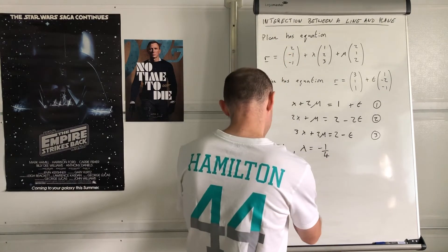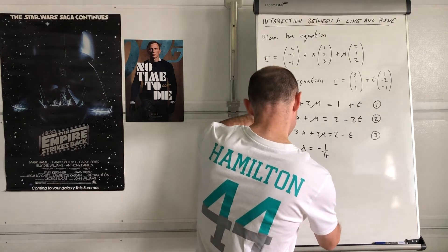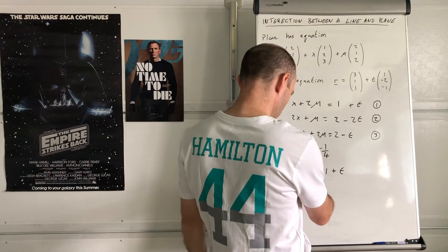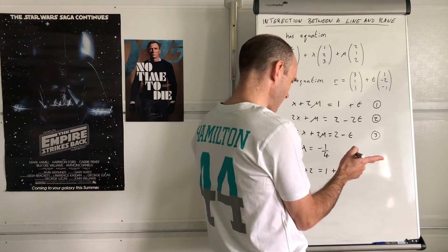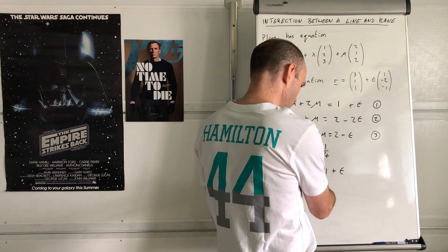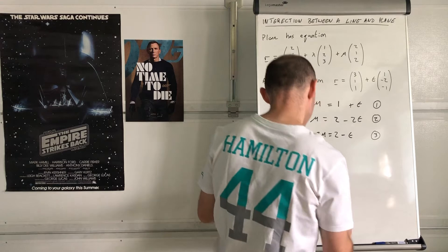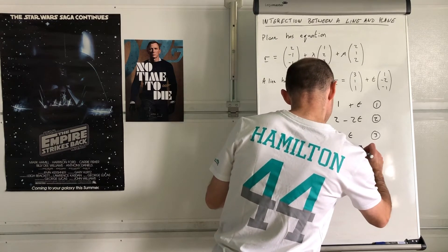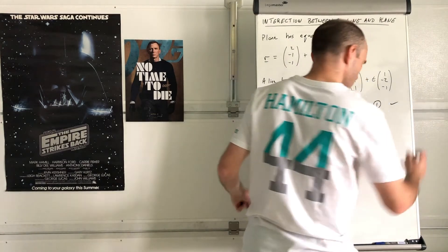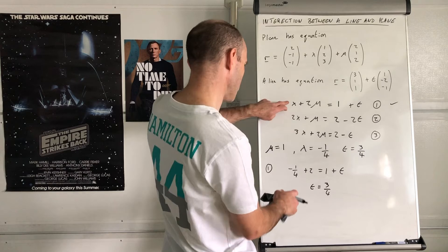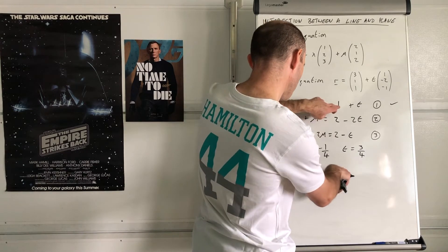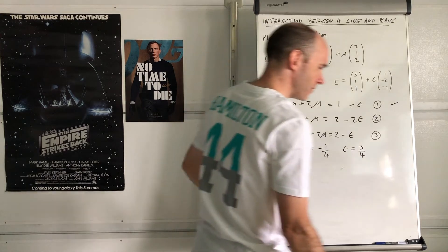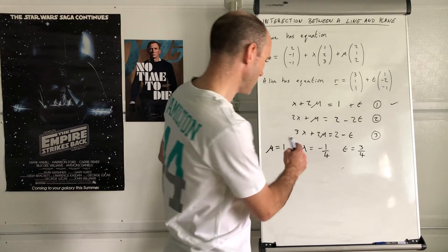Checking: t = 3/4 in equation 1. -1/4 + 2 = 1.75, and 1 + 3/4 = 1.75. That works. Now to verify there's actually a point of intersection, those three values of λ, μ, t must satisfy all three equations. If they don't work in equations 2 and 3, the lines don't intersect. If they do, there's a point of intersection.